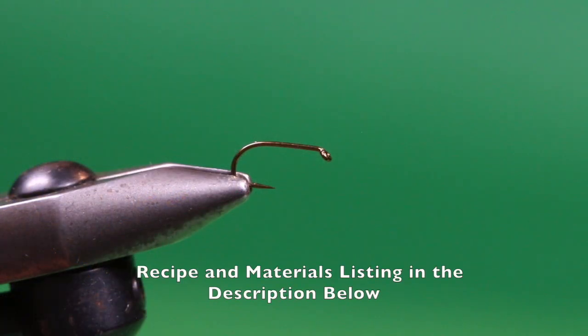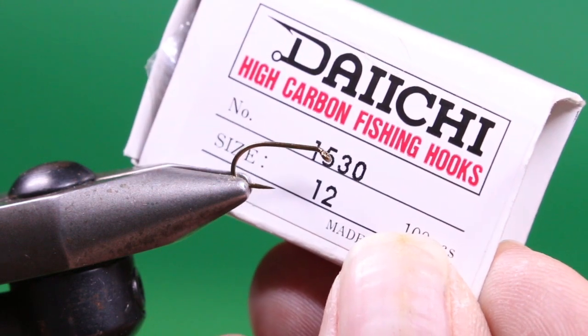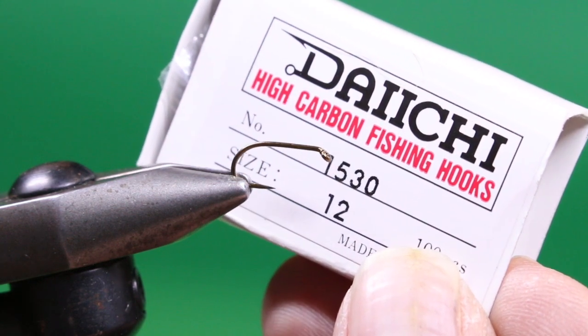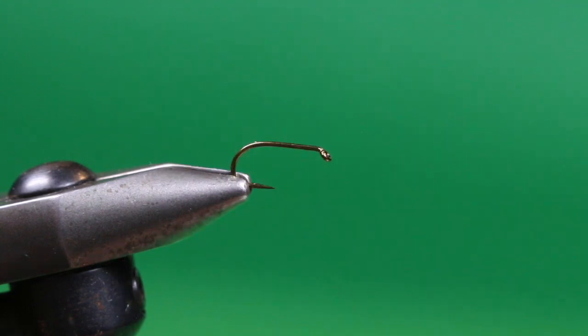Let's tie the Hurlback, an ostrich hurl version of a D-All Back, one of my favorite stillwater flies. I've got a Daiichi 1530 number 12 into the jaws of the vise. You could tie these as big as a 10, 12, or 14. It's one of my favorite patterns when Calibatus nymphs are active.